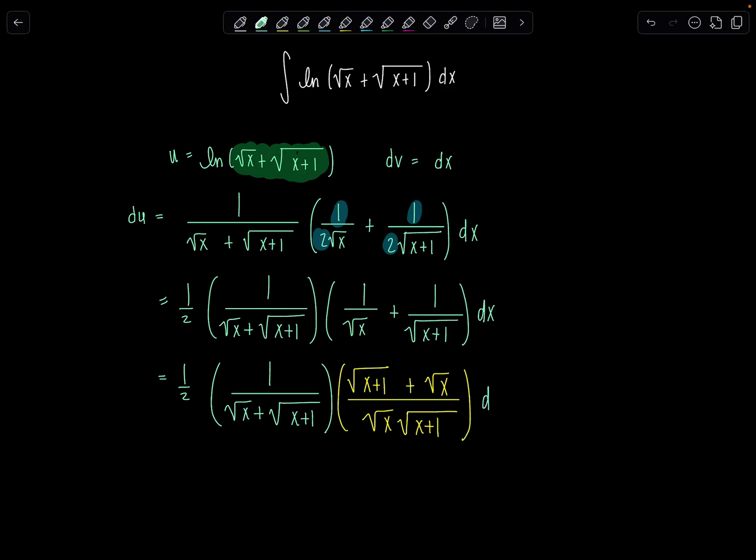Don't forget the dx. And then see, this is the crucial step where so, so beautifully rad x plus rad x plus 1 cancels out. Oh yeah. And then du just ends up being 1 half times 1 over rad x times rad x plus 1 dx.